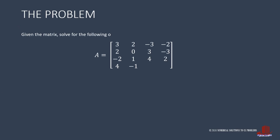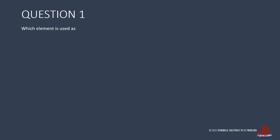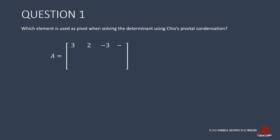The problem contains a matrix A of order 4, which means there are 4 rows and 4 columns. The first question is: which element is used as pivot when solving the determinant using Chió's Pivotal Condensation? In using Chió's Pivotal Condensation, it is a must to have a pivot element valued at positive 1. From the matrix, we can find it at row 3 and column 2. So the answer to the question is A[3,2].